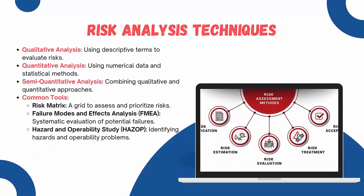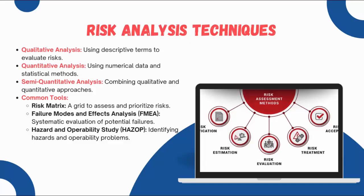There are various methods of conducting risk analysis. The first is qualitative analysis, using descriptive terms to evaluate risk. The second is quantitative analysis, using numerical data and statistical methods. The third is semi-quantitative analysis, combining qualitative and quantitative approaches. Common tools include risk matrices, used to assess and prioritize risks; Failure Modes and Effects Analysis (FMEA), a systematic evaluation of potential failures; and Hazard and Operability Study (HAZOP), for identifying hazards and operability problems. Each technique provides different insights and levels of detail for assessing hazard risks.